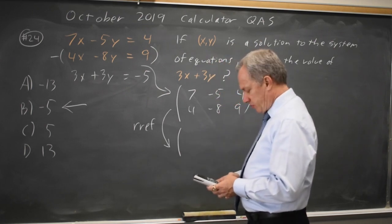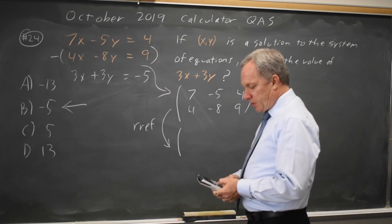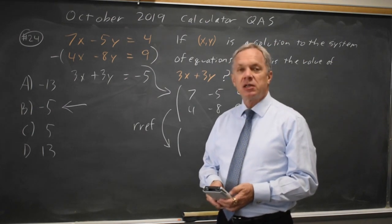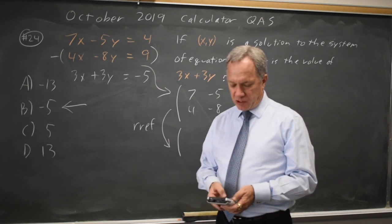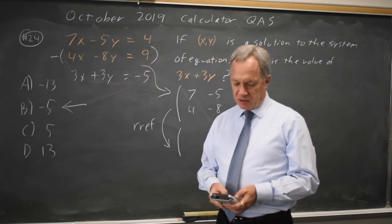Enter 7, negative 5, 4, 4, negative 8, 9. Quit out of matrix and then go back into matrix, matrix math. The math we want to do on this matrix is reduced row echelon form. On my TI-83 or TI-84, similar options on other graphing calculators.